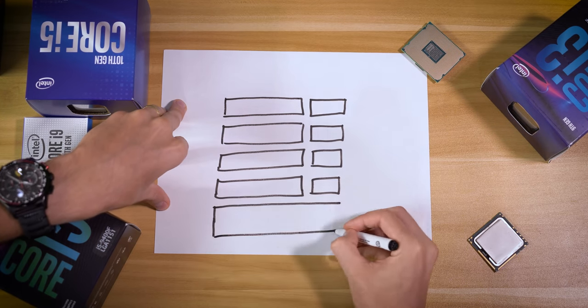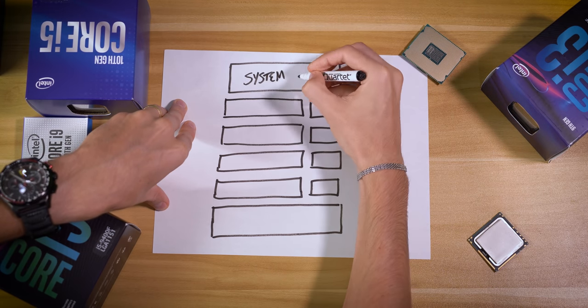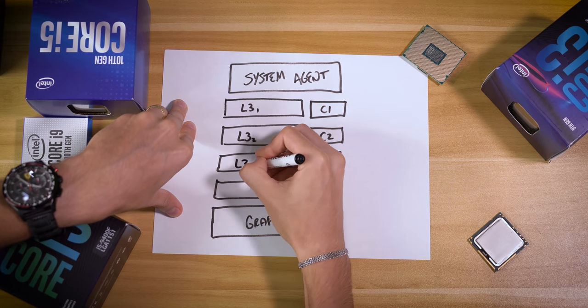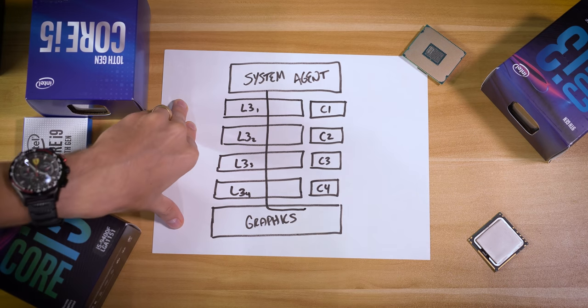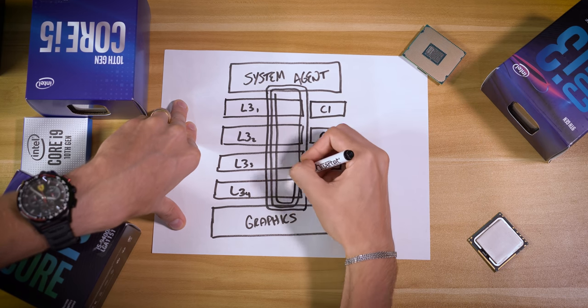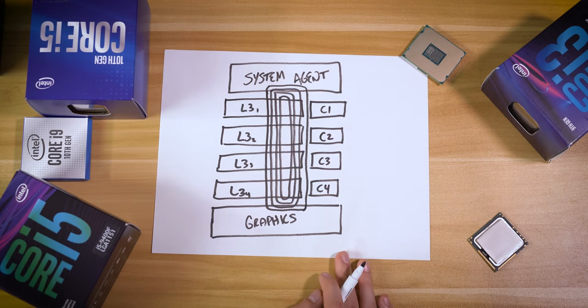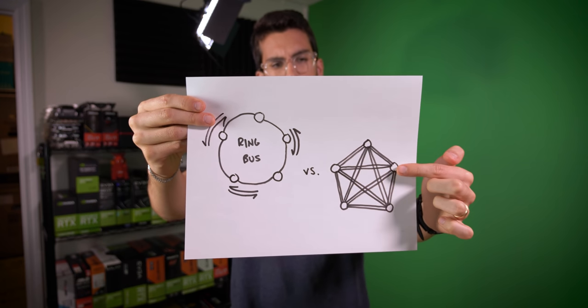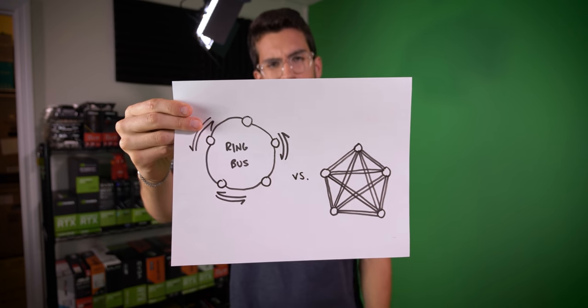Remember, the system agent is traditionally the North Bridge. You don't need dedicated wires running between, specifically, the IGP and chunks of L3 cache. It would overcomplicate the fab, and you'd need a huge chip that would also likely run fairly hot, considering how many traces you would need in there. The way to simplify it and reduce latency overall was the Ring Bus. It beats having a connection from here to here, here to here, here to here, and so on.